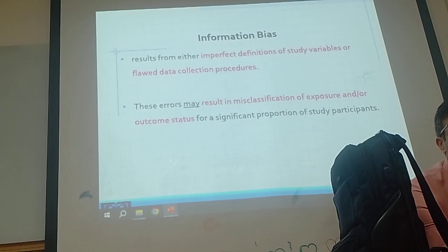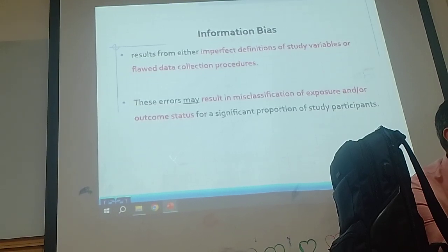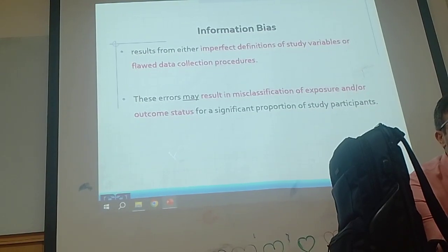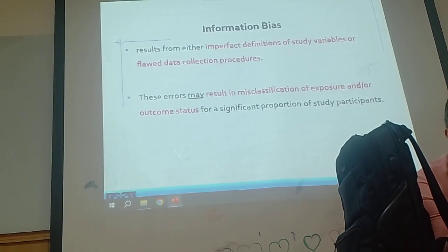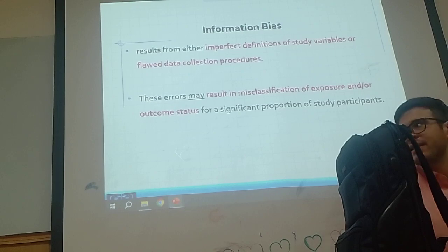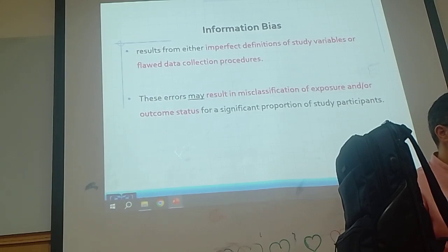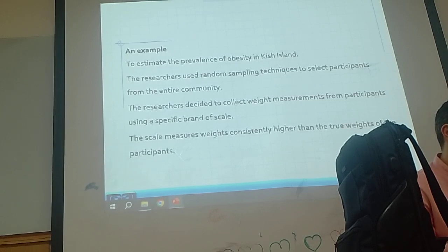Information bias is a major problem in analytical study, but sometimes we face information bias in prevalence or descriptive study. When we want to estimate the mean weight in a population and a scale performs incorrectly — for example, a systematic error — you cannot eliminate the effect of that bias. I'll give you an example about information bias in a prevalence or cross-sectional study.